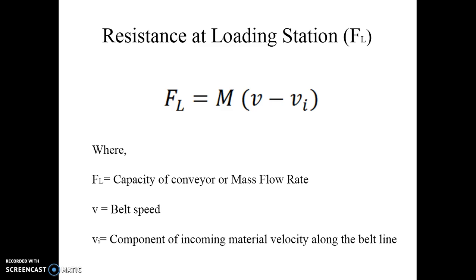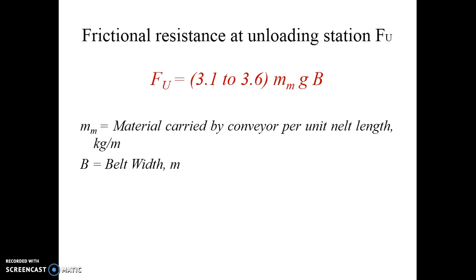FL represents the capacity of the conveyor or mass flow rate. Moving to the next load: frictional resistance at the unloading station. If a separate discharge mechanism is provided, this load must be considered. FU is in the range of 3.1 to 3.6, multiplied by MM (mass of material per unit length), G (gravity), and B (belt width). This gives the formula for frictional resistance at the unloading station.